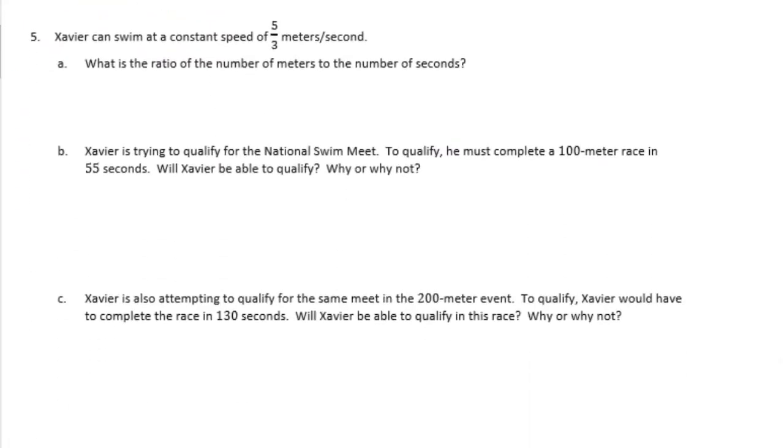Number 5. Xavier can swim at a constant speed of 5 thirds meters per second. What is the ratio of the number of meters to the number of seconds? So meters to seconds would be 5 to 3. Xavier is trying to qualify for the national swim meet. To qualify he must complete a 100 meter race in 55 seconds. Will Xavier be able to qualify? Why or why not?